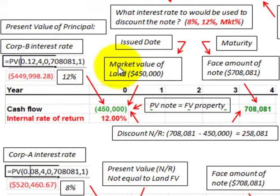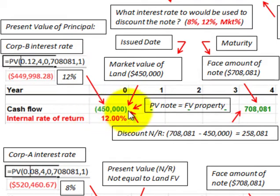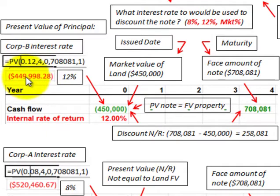Going back to our example, we knew the market value of the land was $450,000. So we plugged that into our cash flow equation — the $450,000 cash outflow and the face amount of the note at $708,081 — and using the internal rate of return function on our calculator, we determined that to be 12%. We confirmed this by discounting the $708,081 back for four years at 12%, which gives the same amount of $450,000. Based on that, we were able to determine the realistic interest rate that should be used in discounting this notes receivable.